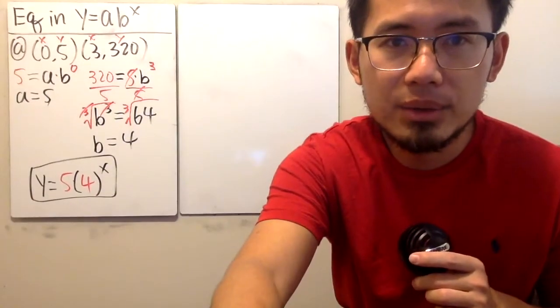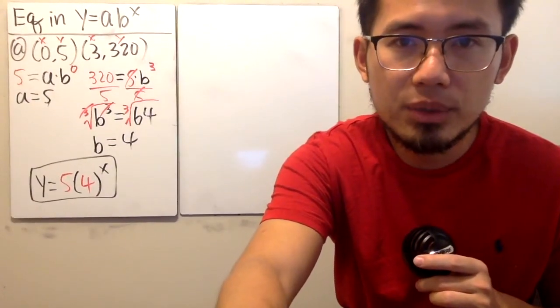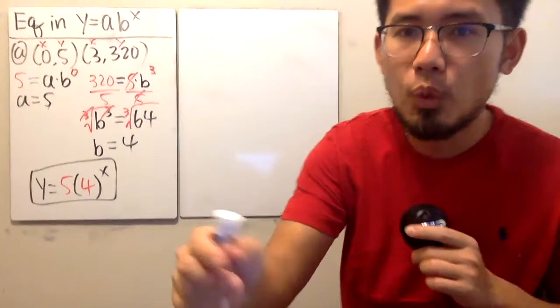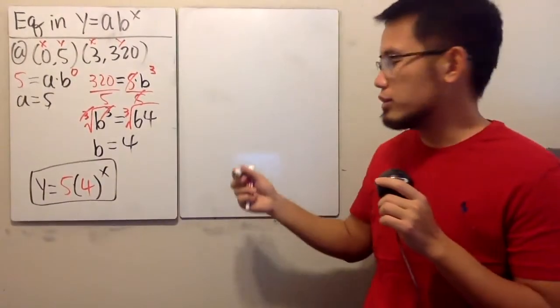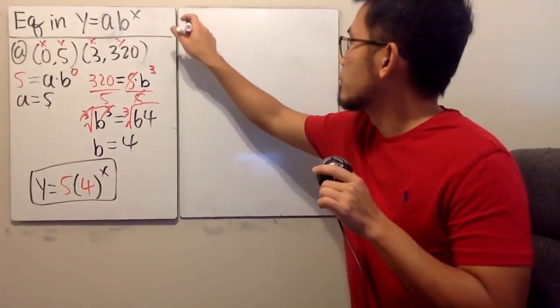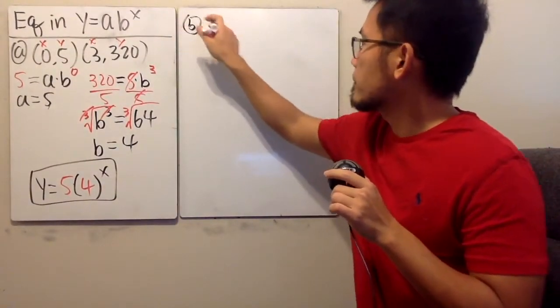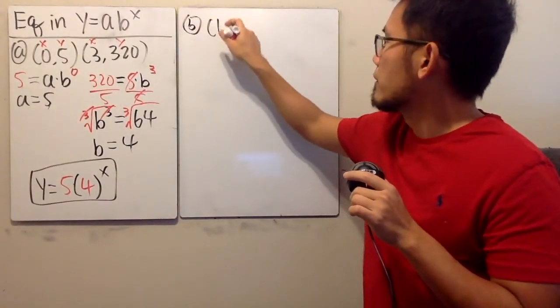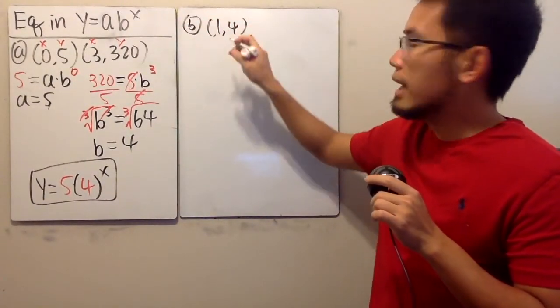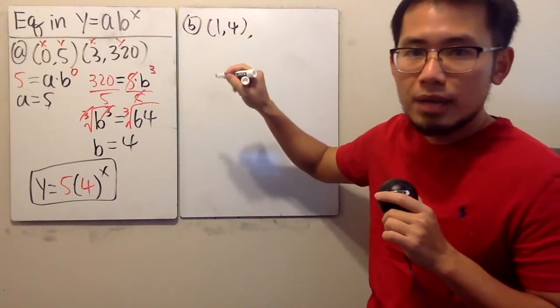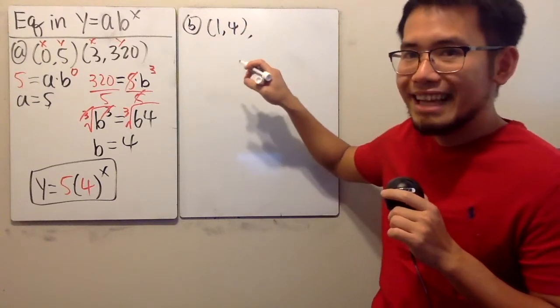Here is the other question — part b. The other question uses points (1, 4) and (3, 1).